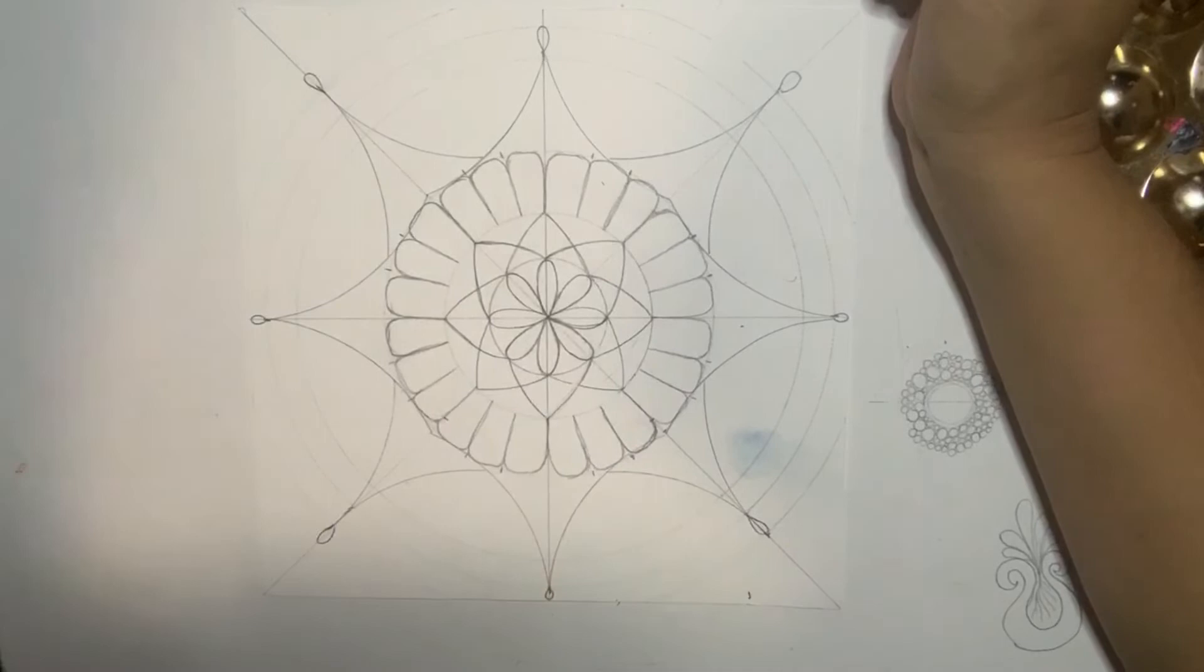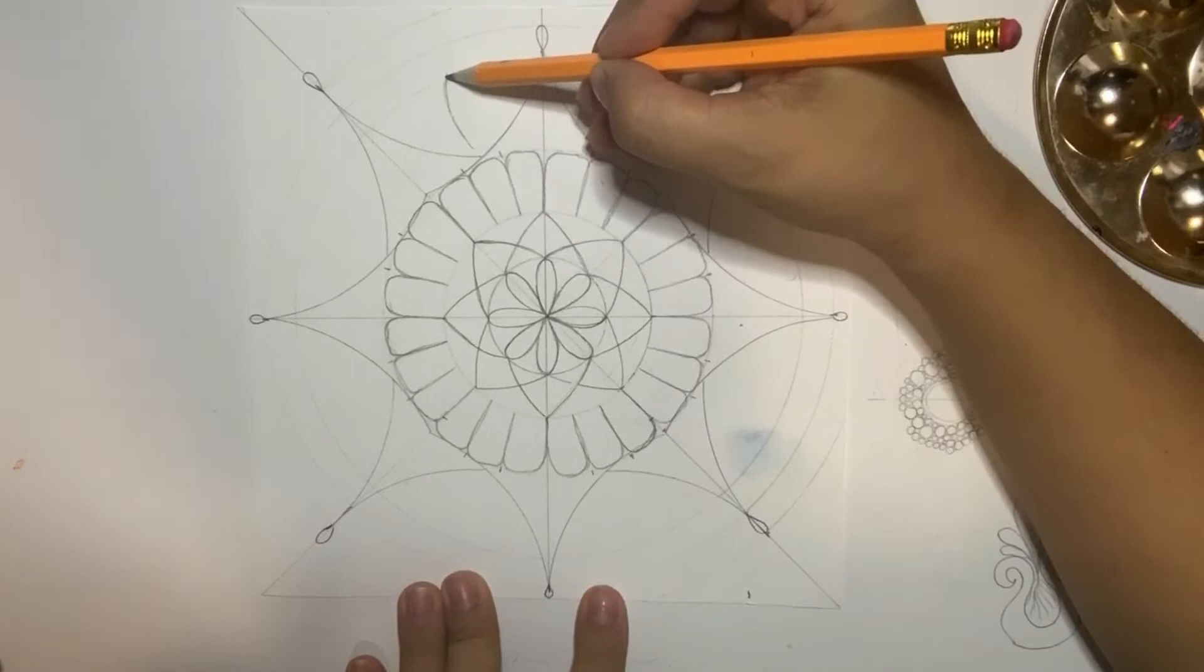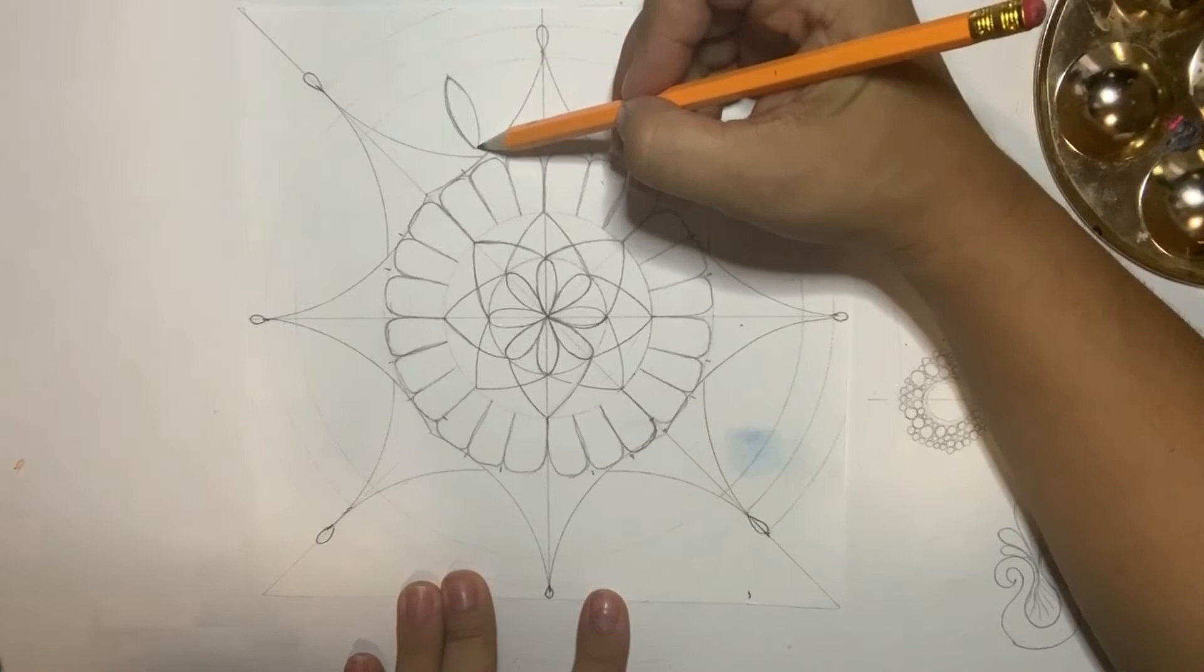So now I'm going to make here in the middle some sort of lotus flower. And I make like a petal, not so rounded. And I get familiar with it, I make it smooth. Don't press the pencil that hard.